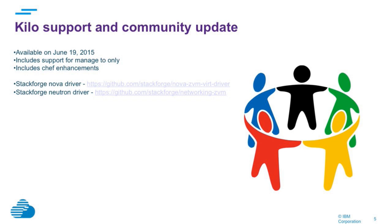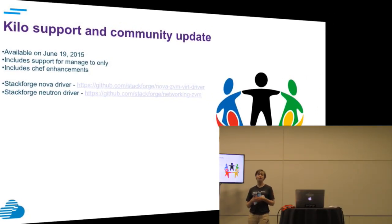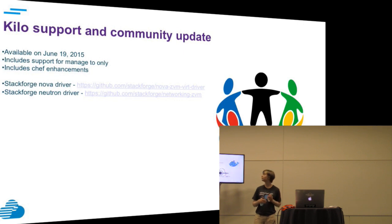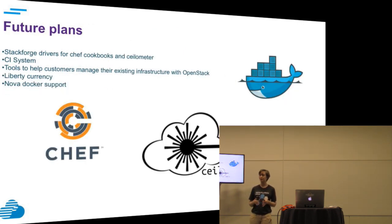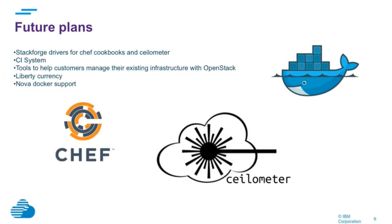Another big thing we've been working on is getting more involved in the community. We have two StackForge drivers — one for Nova and one for Neutron — and we're actively developing out in the community, not just putting static snapshots of our code. The goal for Nova is eventually getting in-tree entry. Looking forward, you should see more StackForge drivers covering Ceilometer support, because chargeback and monitoring are huge for our Z customers. We're also looking to put our Chef cookbooks out in the open source community, and we should have a CI system up and running soon — all part of working toward in-tree entry in Nova.